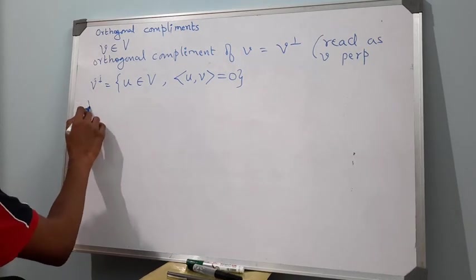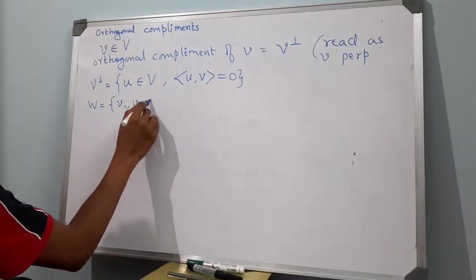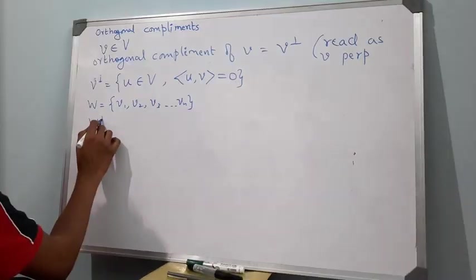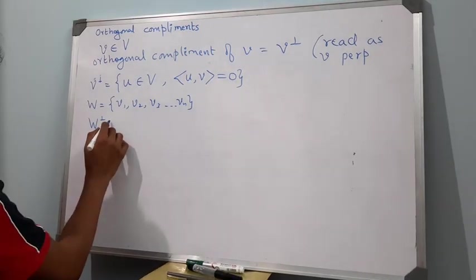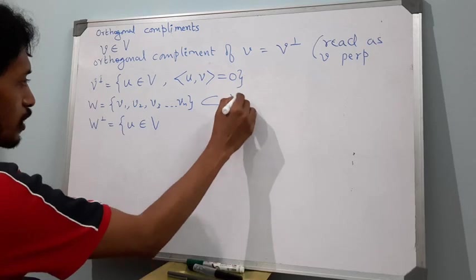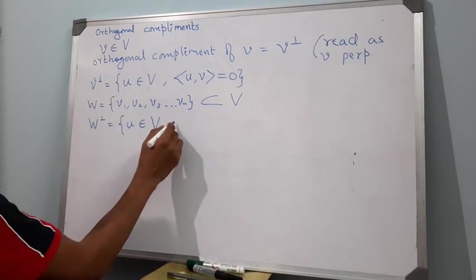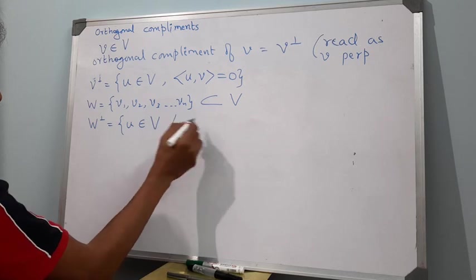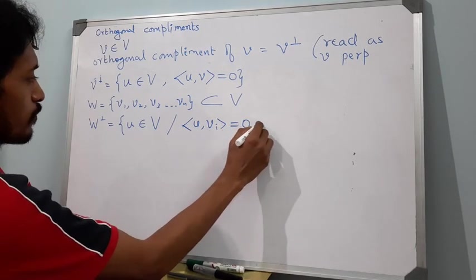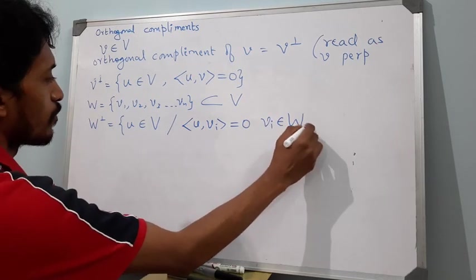If we have W equal to {v1, v2, v3, ..., vn}, then we can write W perp to be the set of vectors in V — a subset of the inner product space V — such that u is orthogonal to each vector vi, where vi belongs to W for each i.